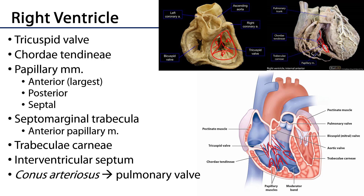In association with that is a large extension of myocardium that cuts across the right ventricle called the septomarginal trabecula. The septomarginal trabecula is also known as the moderator band. It was first described by Leonardo da Vinci, and it was thought that it moderated the expansion of the right ventricle. We now know that it's a shortcut for the lion's share of the right bundle branch as it cuts across to serve the wall of the right ventricle.